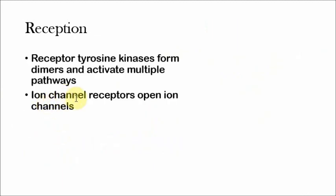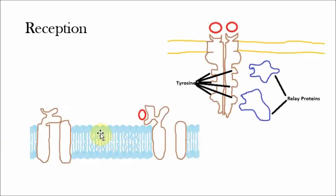Next we have ion channel receptors, which are very self-explanatory. They just open ion channels. Essentially it's a gated ion channel which can be opened when it receives a signal from the signaling molecule. When this opens, it will often allow a very sharp increase or drop in the concentration of a certain ion. Often these use calcium ion, which is especially important in cell signaling. Essentially, ion channel receptors open ion channels.